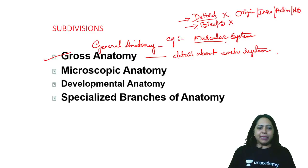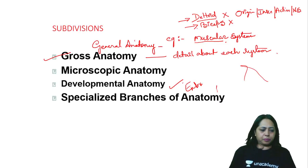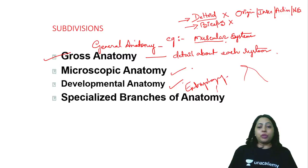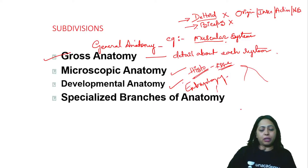Next is developmental anatomy, also called embryology. Microscopic anatomy is where you use a microscope to look at and study various structures — that is histology. 'Histo' means tissue, so histology is the study of tissues, which is microscopic anatomy. We also have specialized branches of anatomy — these are some of the subdivisions.